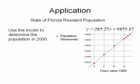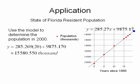Now let's use the model to determine the population in 2000. I substitute x equals 20, giving 285.269 times 20 plus 9,875.170, which is approximately 15,580.550 thousand, or 15,580,550 Florida residents.